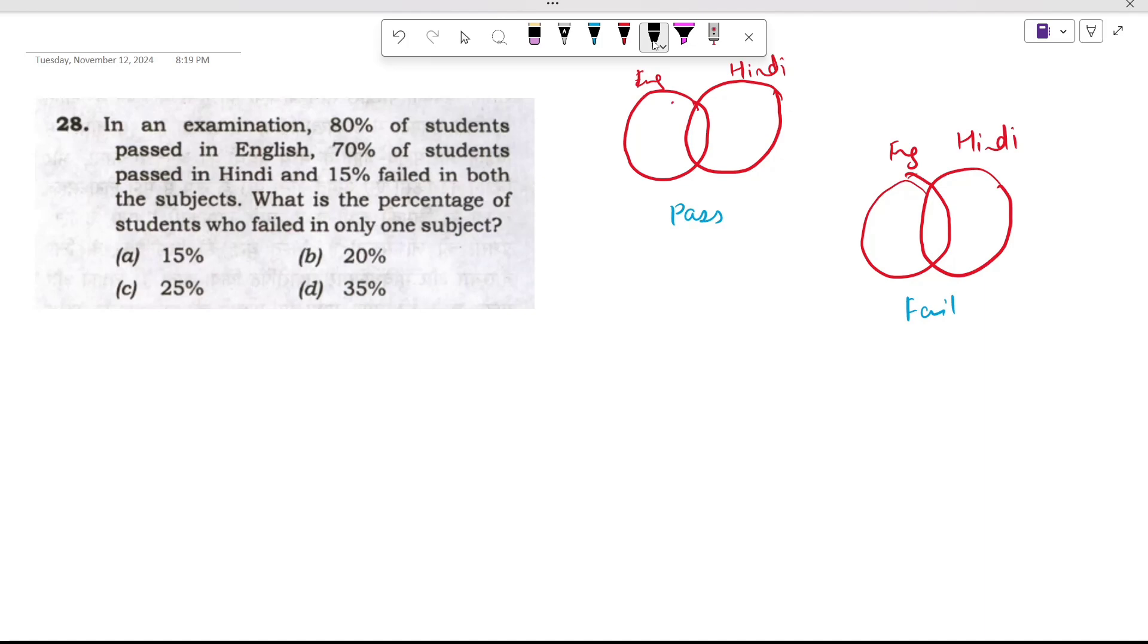It's given that 80% of the students - let's assume the total students is 100X. 80% of the students passed in English. So 80X have passed, and 20X would have failed.